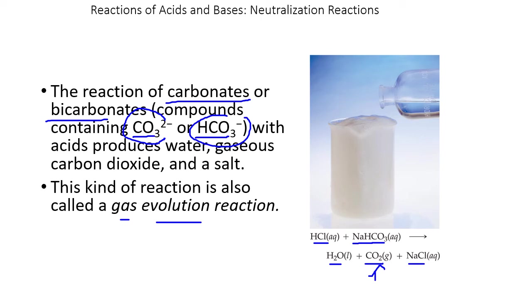The carbon and oxygen in the bicarbonate or carbonate turn into carbon dioxide, and then anything left over is just a salt floating around. So our second type of reaction is a gas evolution reaction: an acid plus an ionic compound containing carbonate or bicarbonate produces water, carbon dioxide gas, and a salt. If you see CO₃ or HCO₃, you know you're producing a gas.